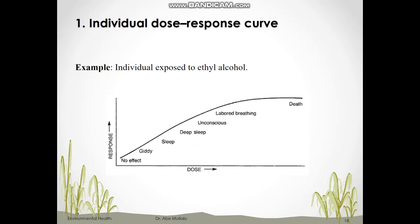This figure shows a typical dose-response curve for an individual exposed to ethyl alcohol found in beer, cider, and wine. A gradual and systematic increase in ethyl alcohol dose is associated with an increase in responses. The effect ranges from no effect when the dose is zero to almost death when the dose is increased to a toxic level.